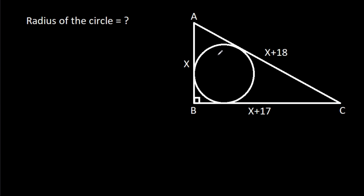In this video, we have been given a circle inside a right angle triangle. AB is x, BC is x plus 17, and AC is x plus 18. We have to find the radius of the circle.